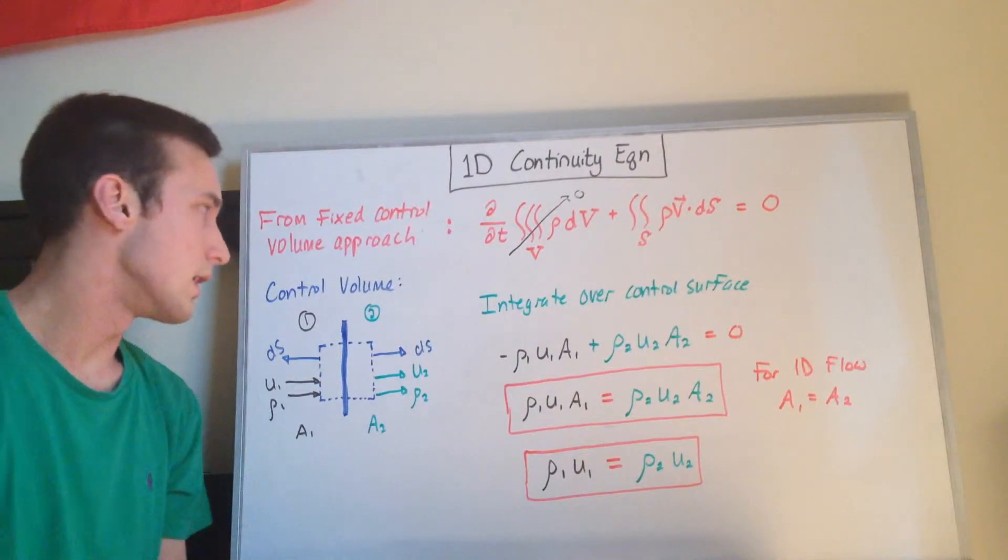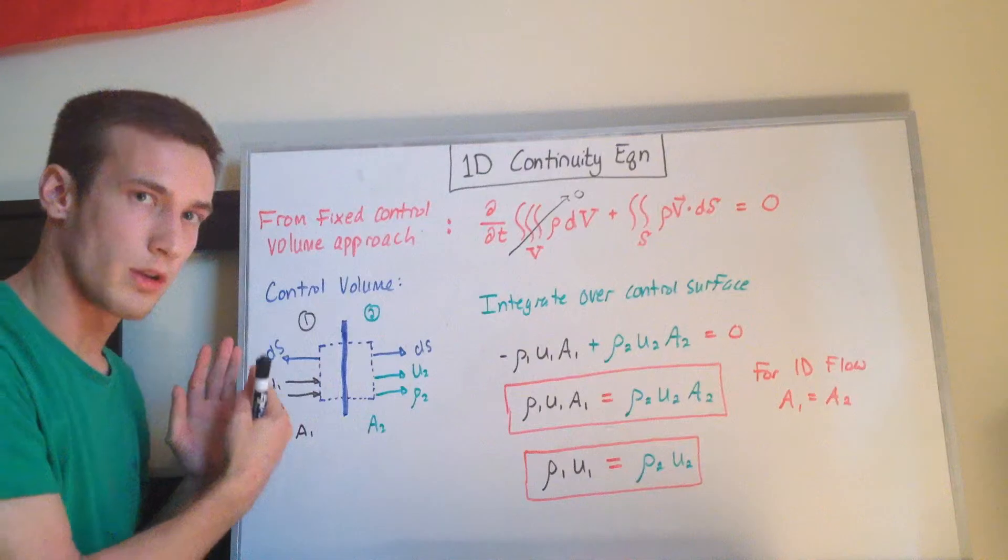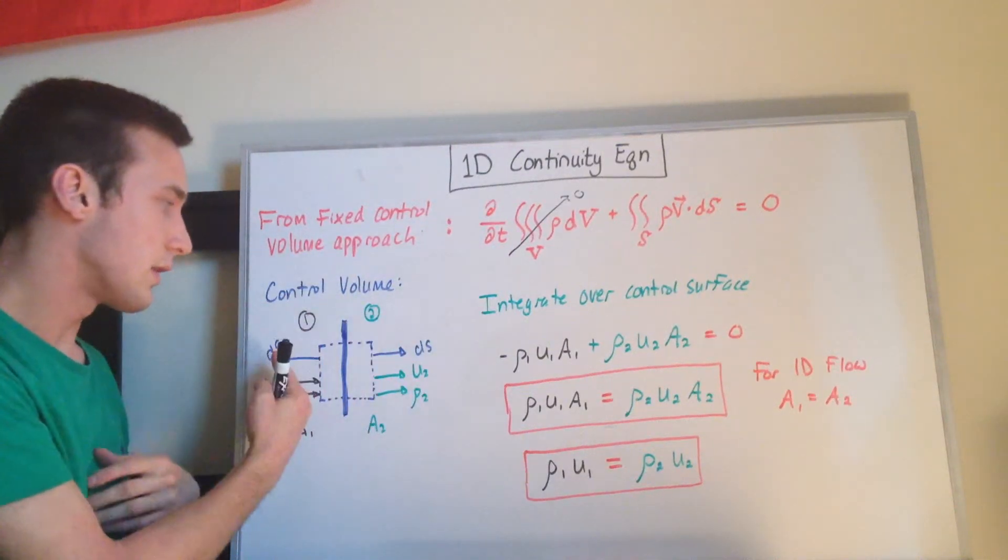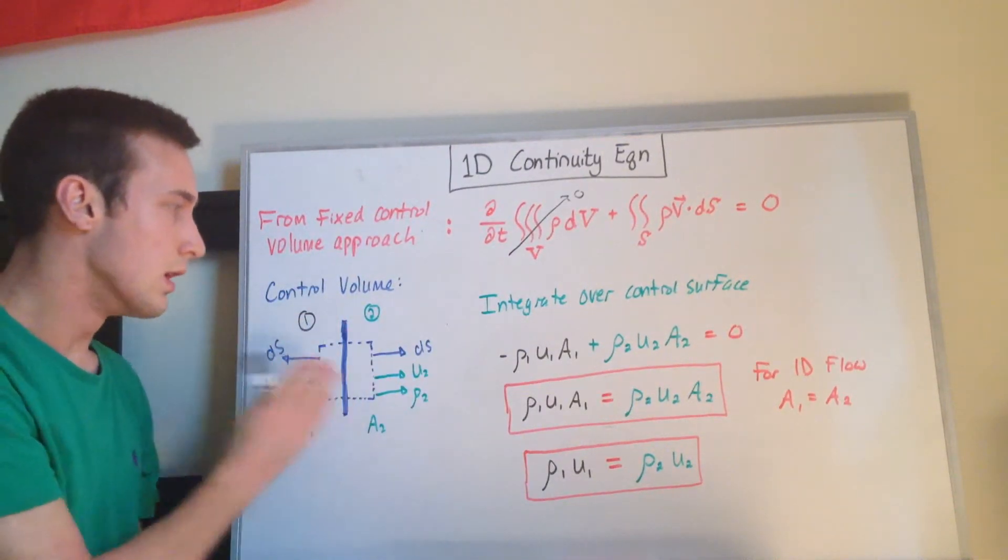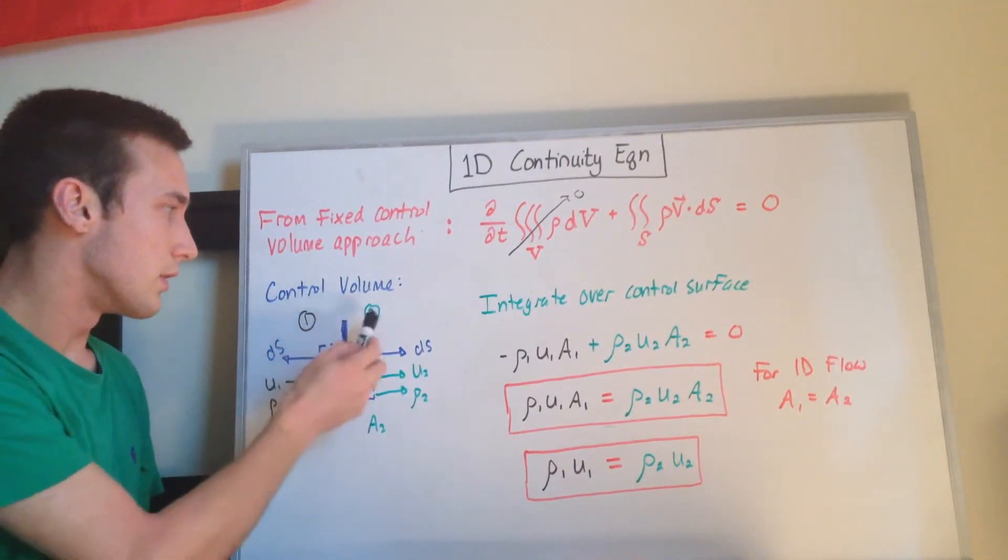So I'm going to define a control volume here. I'm going to start from state 1, and we're going to go to state 2. So 1 is on the left side of this invisible wall, and state 2 is on the right side, and I've drawn a control volume around it, separating out these two states.